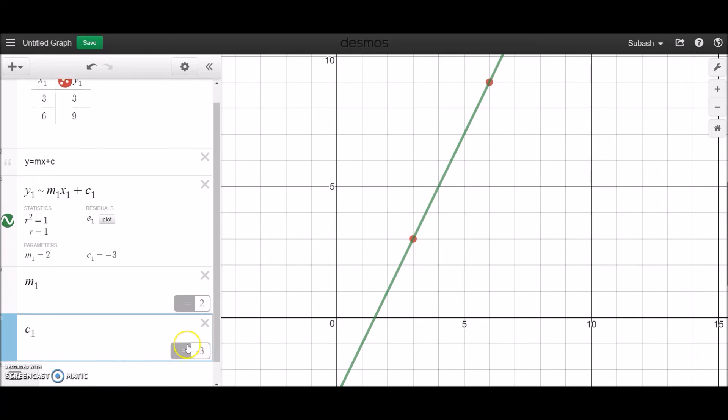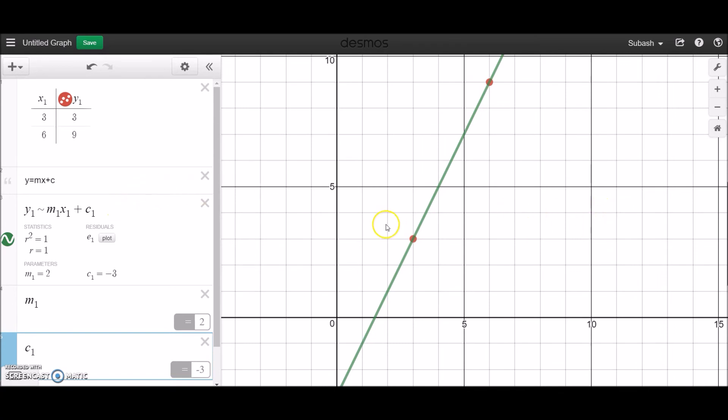So if I was to go on the next line and I put in m₁, as you can see it's automatically doing 2. And if I do c₁ it should show the -3.